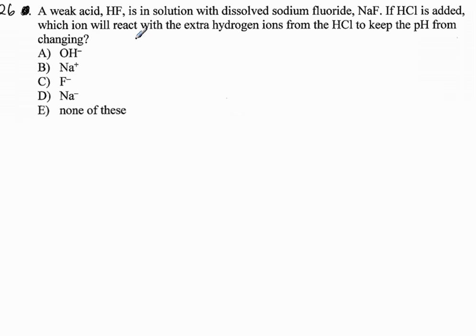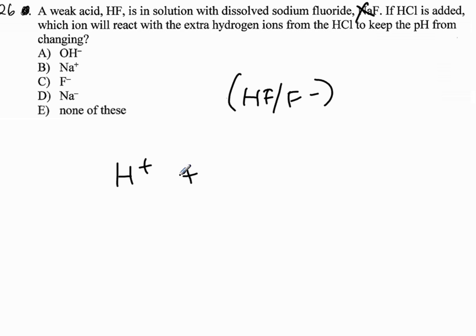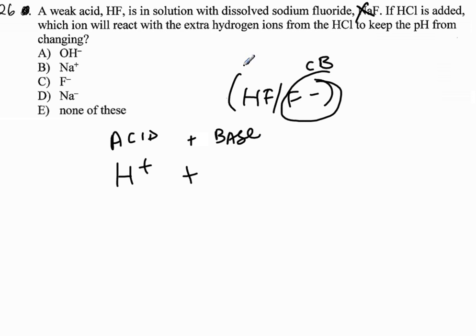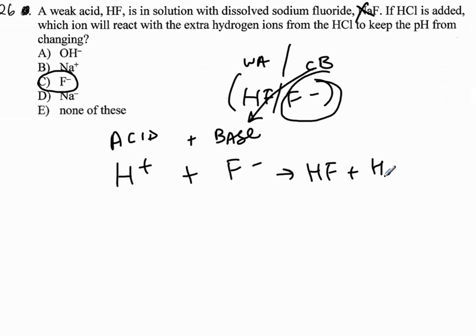Question 26: a weak acid HF is dissolved in sodium fluoride, giving HF and F⁻ — sodium is a heartbreaker, so we have a weak acid buffer system. When HCl is added, we're adding H⁺. To counteract an acid, we need a base — in this case the conjugate base F⁻ leaps in. The F⁻ ion keeps the pH from changing. Ultimately the reaction produces HF and water. In a buffer system, acid and base always react together.